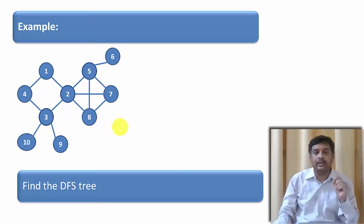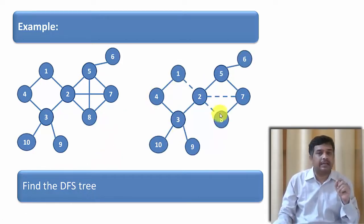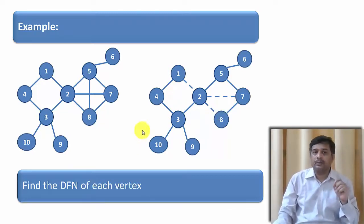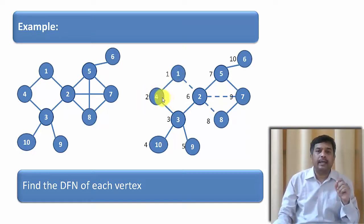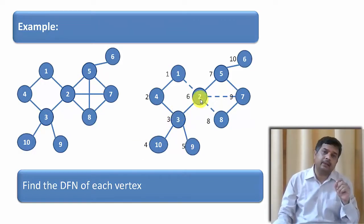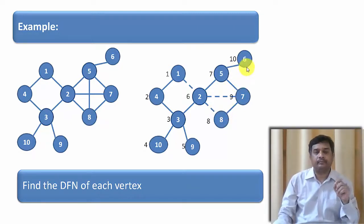So let us try to apply these rules to find the articulation point of a particular graph. This is the graph given. What we need to do first is find the depth first tree. For this particular graph, let us assume this is our depth first tree. The next step is we are going to find the dfn number — the depth first number — of each vertex. Starting with 1, it is the root, so it is 1. Towards its left, this becomes 2. Again towards its right, so this becomes a root again, this becomes 3. Towards its left 4, towards its right 5. Again there is a tree here, so this becomes 6. Again node 5, so dfn is 7. Then 9, 8, and 10. This is how we found the depth first number of each particular vertex.